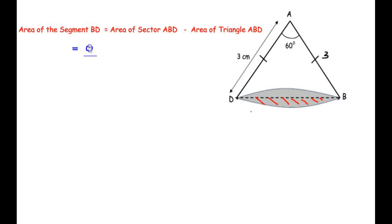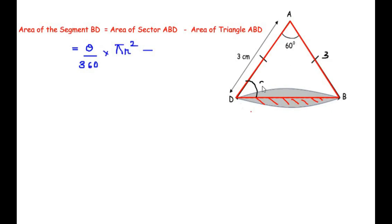The formula for area of a sector is theta over 360 times pi r squared, where theta is the central angle — in this case 60 degrees — and r is the radius. To find the area of triangle ABD, we first check if it is equilateral. Two sides are given as 3 centimeters, and the included angle at A is 60 degrees.